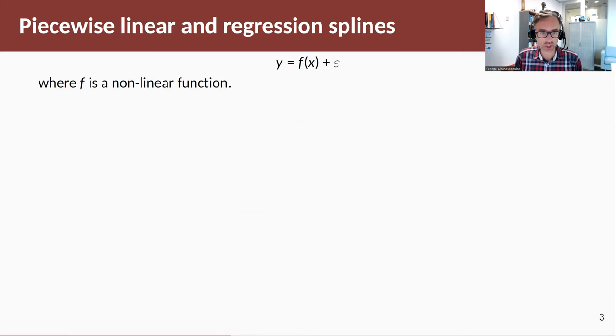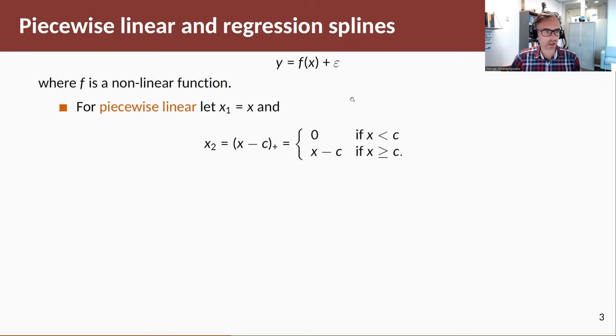If a log transformation is not good enough and we want more flexibility, we can think about having a nonlinear function for our x's. A commonly used nonlinear function is piecewise linear. The way you specify this is: let a new variable x₁ equal x, and then specify a new variable x₂ which is based on x but takes the value zero if x is below some threshold c, and takes the value x minus c if x is above c. c is the point where your trend is forced to bend.